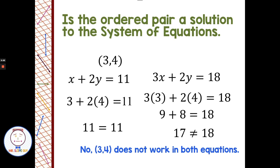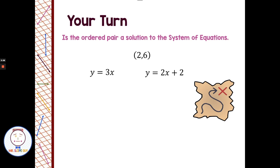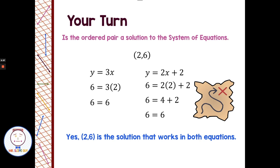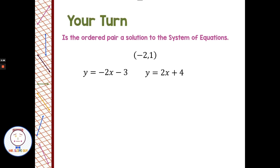Alright, you guys try this on your own — pause the video, give it a shot, then come back and we'll see how you did. Welcome back! We put x = 2 and y = 6 into the first equation: 3 times 2 is 6, so 6 = 6 — works great. In the second equation: 2 times 2 is 4, plus 2 is 6, so that works too. Yes, (2, 6) is the solution — if we graph those two lines we'd see them intersect at (2, 6).